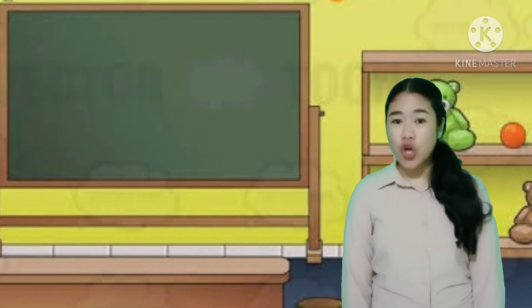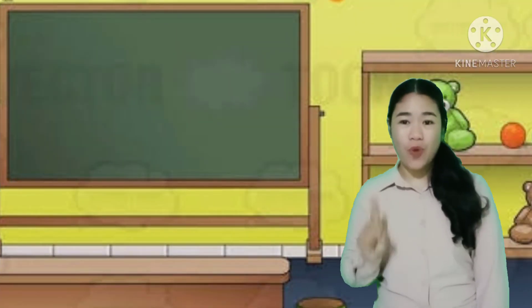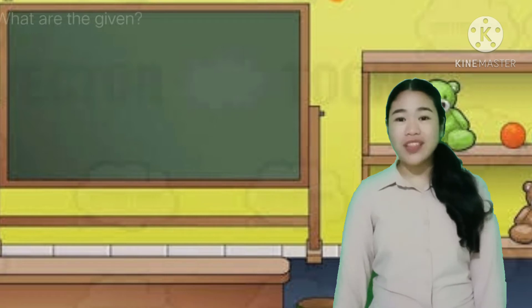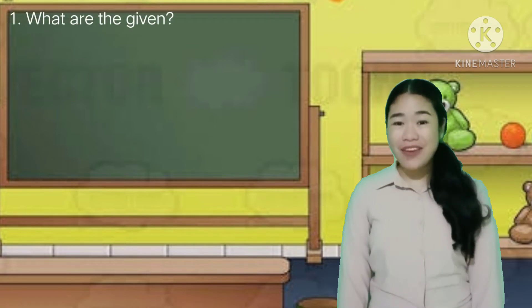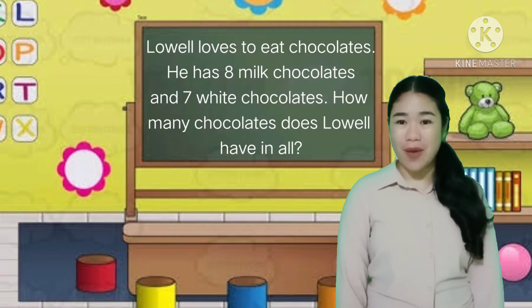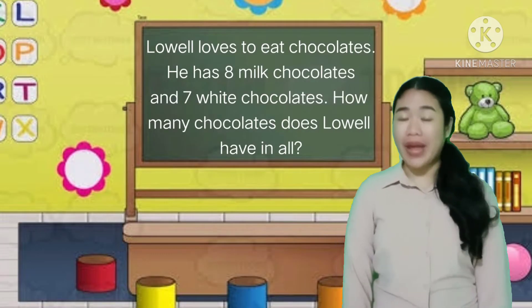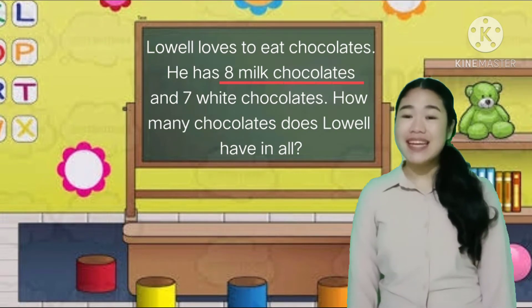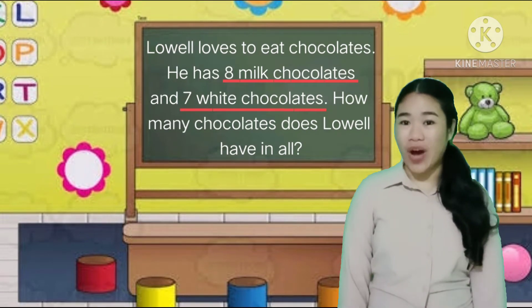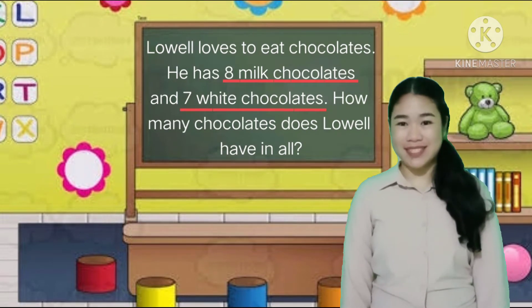we need to know number 1: What are the given? The given are the numbers in the problem. So, 8 milk chocolates and 7 white chocolates.